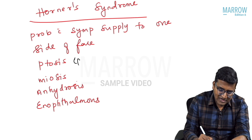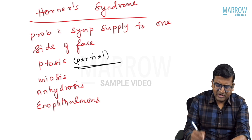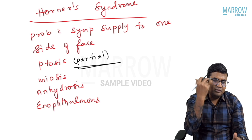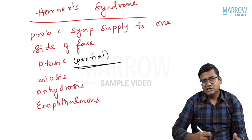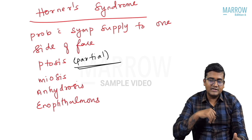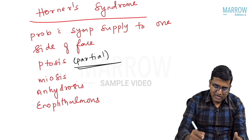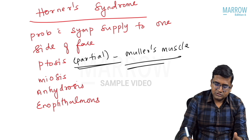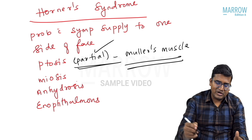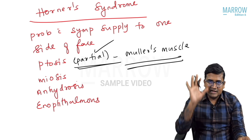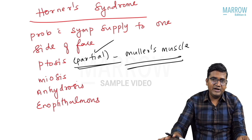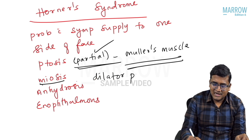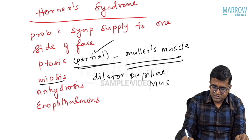The ptosis in Horner syndrome is partial ptosis only, because the Muller's muscle — a smooth muscle — is involved, not the LPS muscle. Involvement of the LPS muscle results in complete ptosis. Miosis is due to involvement of the dilator pupillae muscle; when the dilator pupillae is paralyzed, the patient has a constricted pupil.